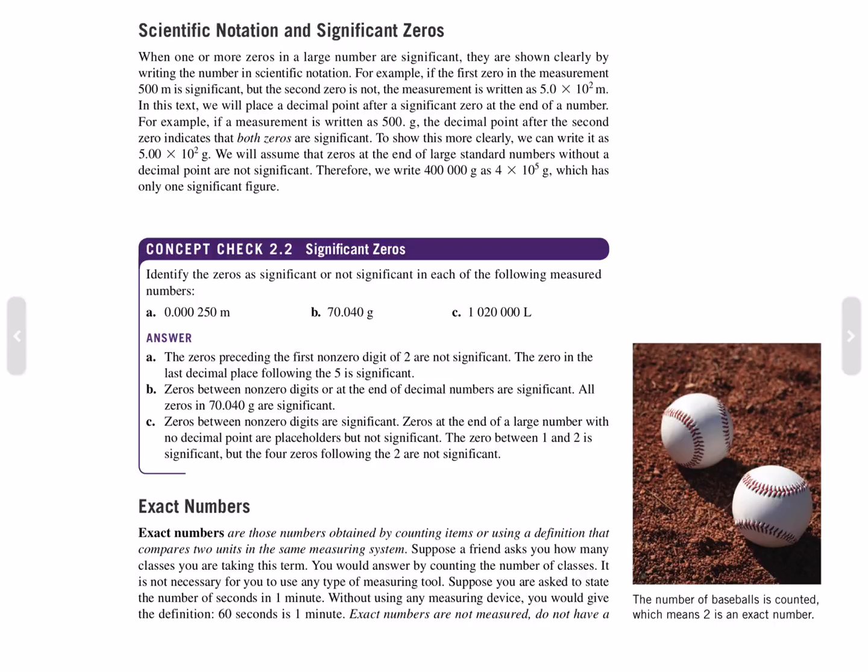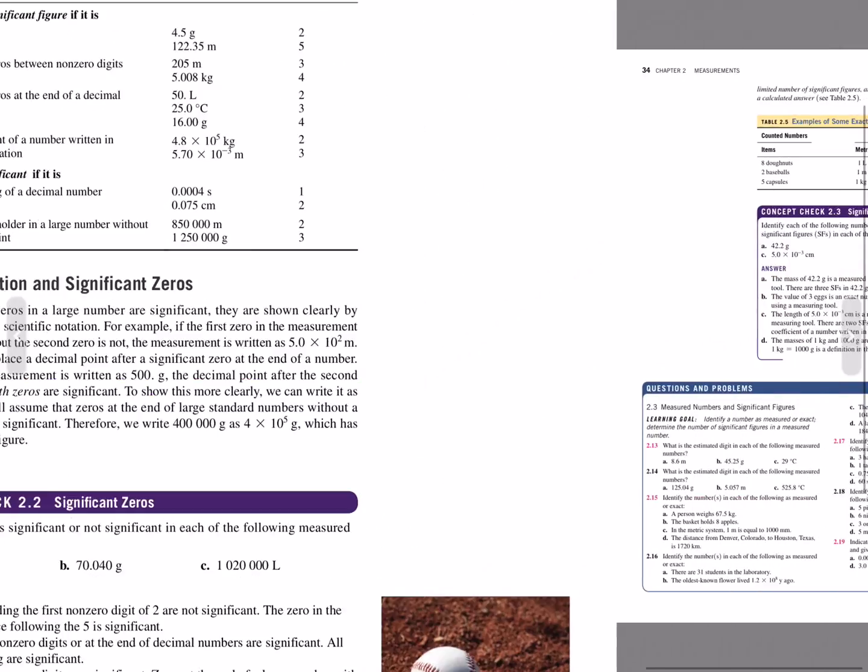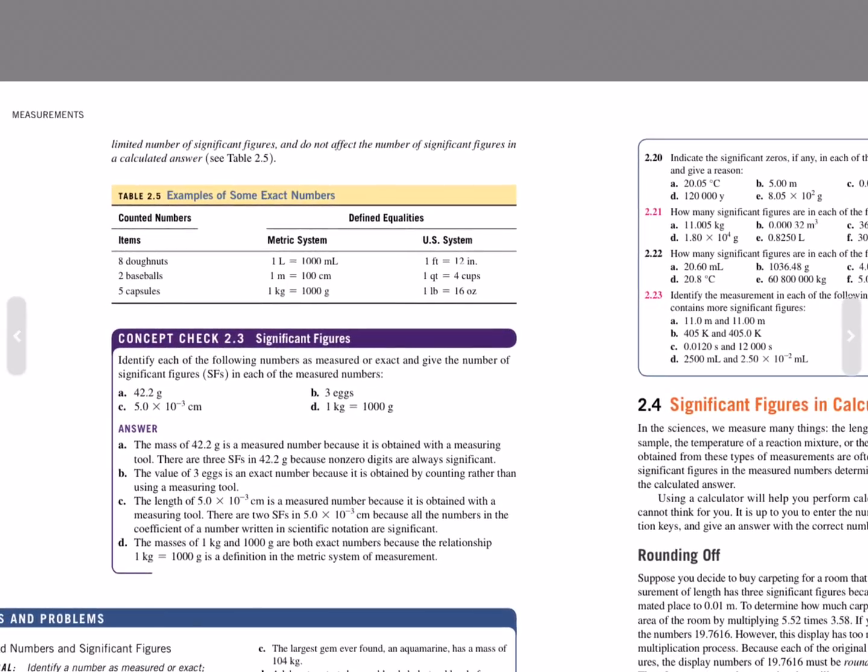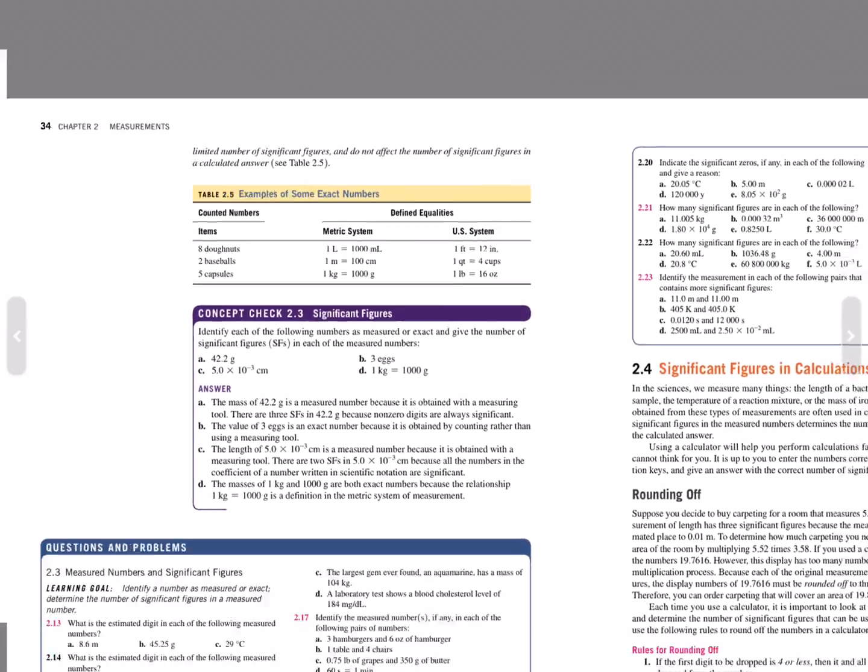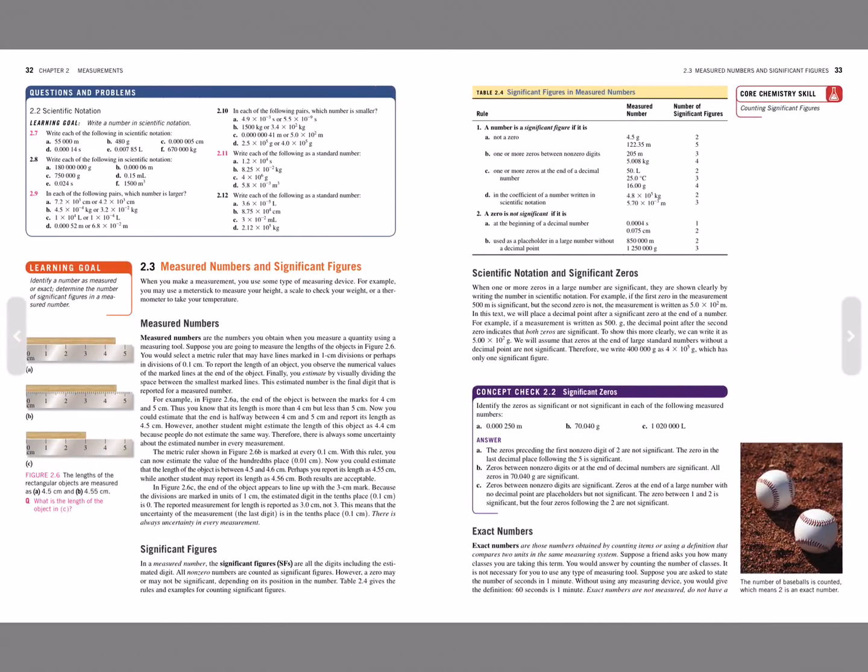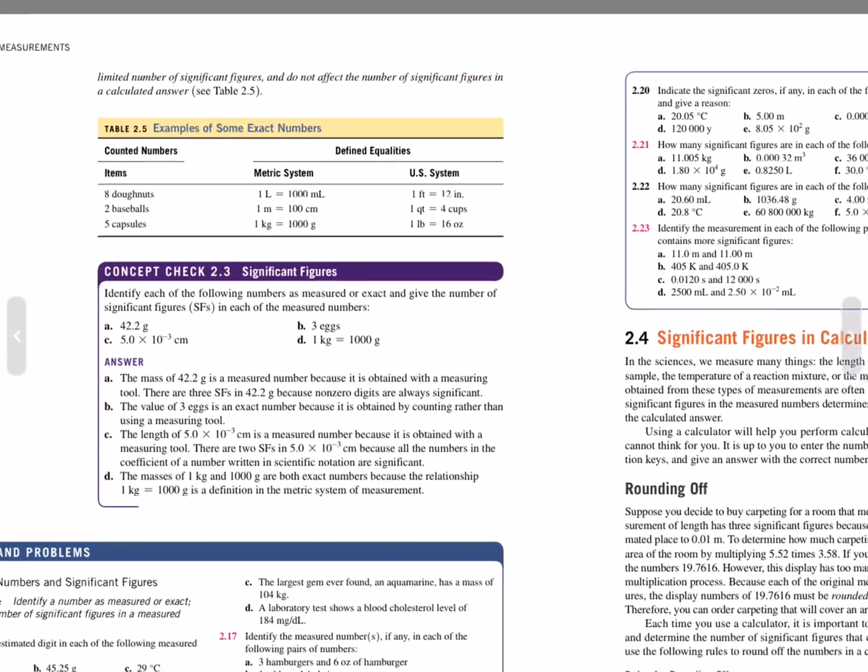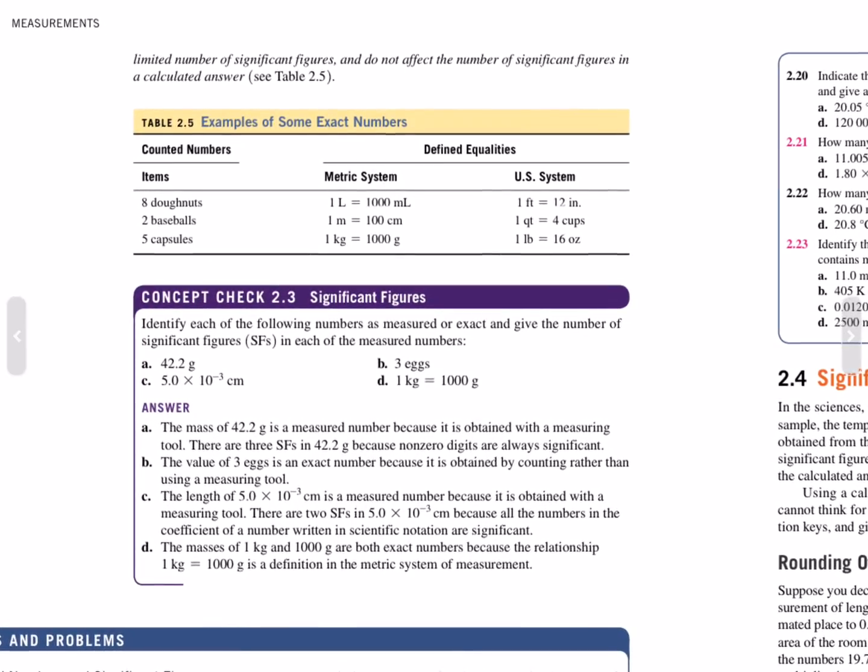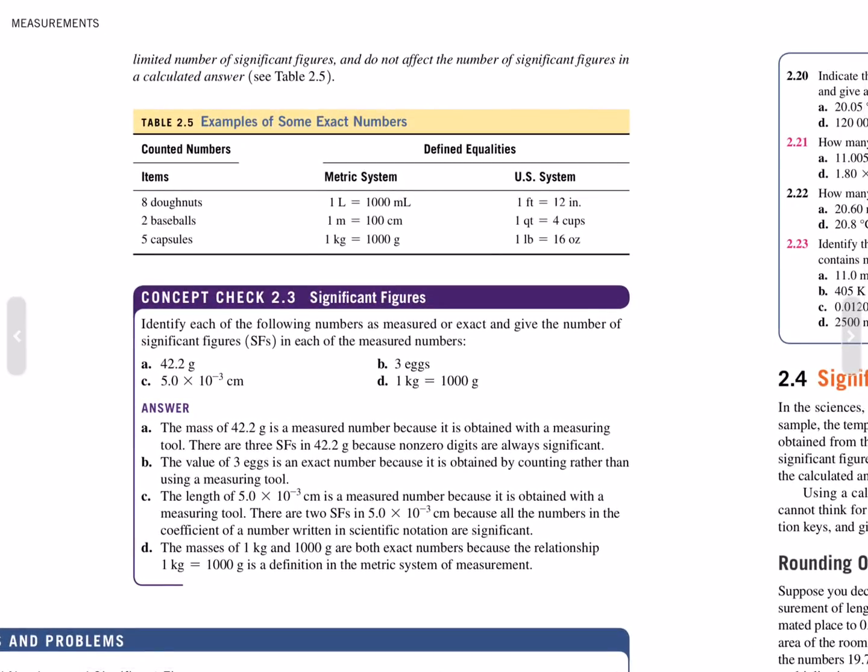Suppose you are asked to state the number of seconds in a minute. Without using any measuring device, you would give the definition of 60 seconds in a minute. Exact numbers are not measured, do not have a limited number of significant figures, and do not affect the number of significant figures in the calculated answer.